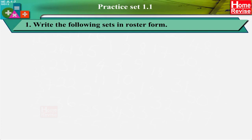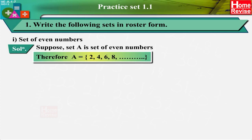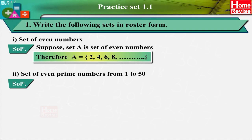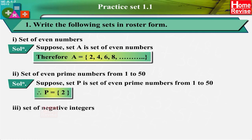Practice Set 1.1, Question 1: Write the following sets in roster form. (1) Set of even numbers: Let A = set of even numbers, therefore A = {2, 4, 6, 8, ...}. (2) Set of even prime numbers from 1 to 50: Let P = set of even prime numbers from 1 to 50, therefore P = {2}.